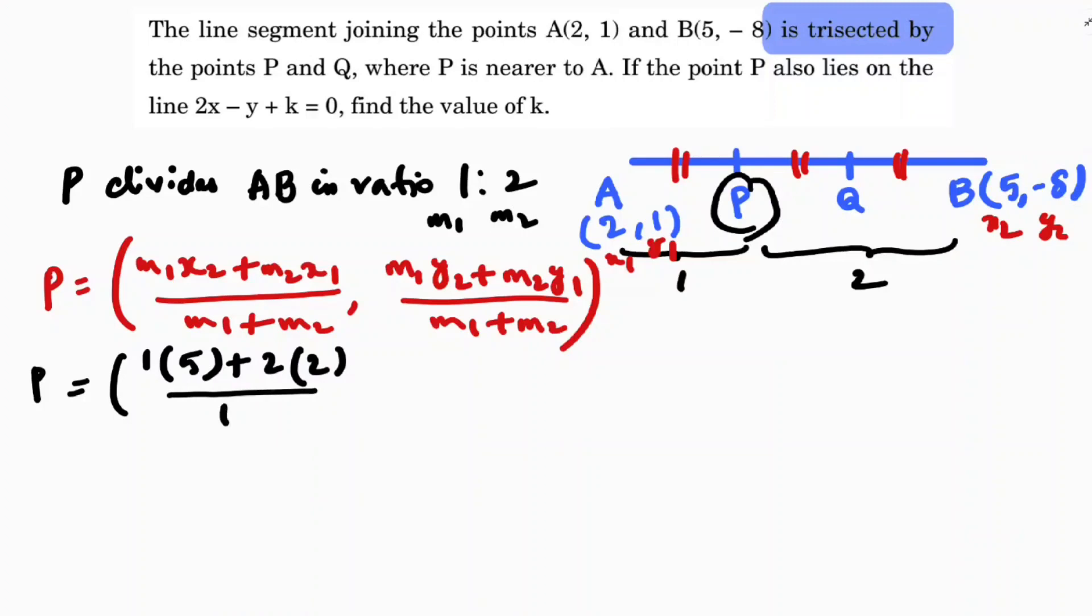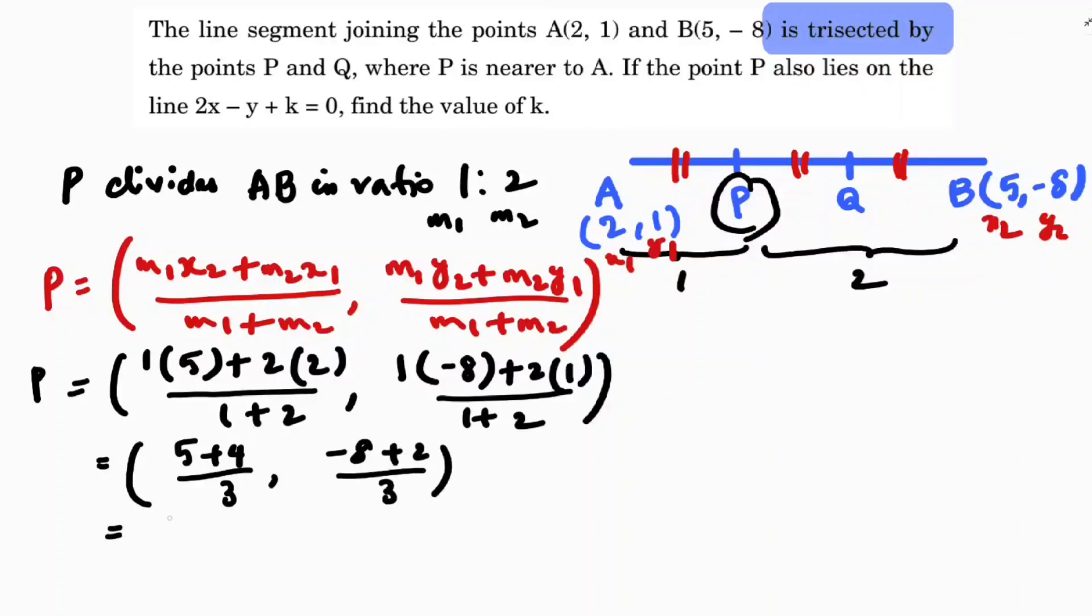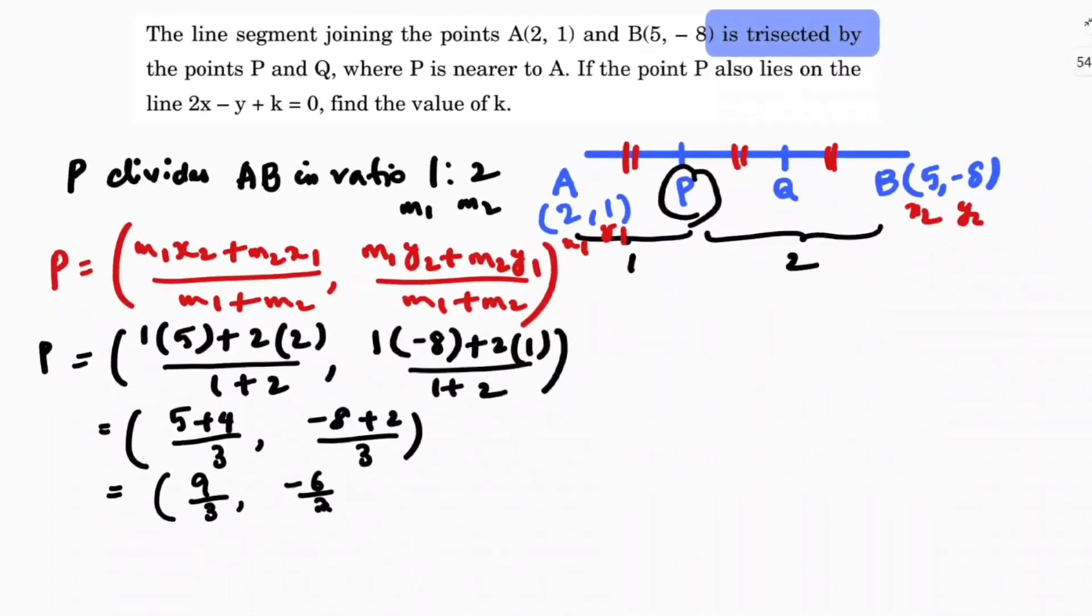For the y-coordinate: 1 times (-8) plus 2 times 1, all divided by 1 plus 2. So 5 plus 4 is 9 over 3, which is 3. And -8 plus 2 is -6 over 3, which is -2.